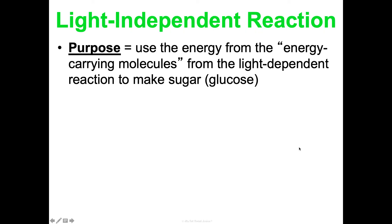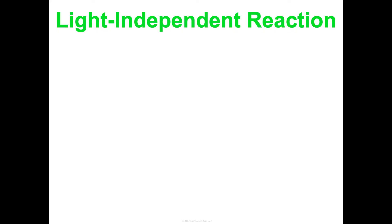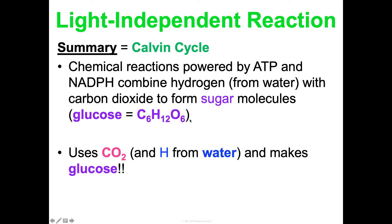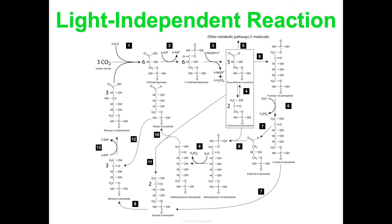The light-independent reaction: the purpose is to use the energy from those energy-carrying molecules, ATP and NADPH, to make sugar or glucose. This is happening in the stroma. This is also known as the Calvin cycle — it's a ton of chemical reactions powered by ATP and NADPH from the first reaction. They combine hydrogen from water with carbon dioxide in order to make sugar. One glucose molecule is six carbons bonded to twelve hydrogens bonded to six oxygens: C6H12O6. It's using carbon dioxide and the hydrogens from water to make glucose. There are a lot of small steps and rearranging going on, but you just need to understand what we see at a high level.